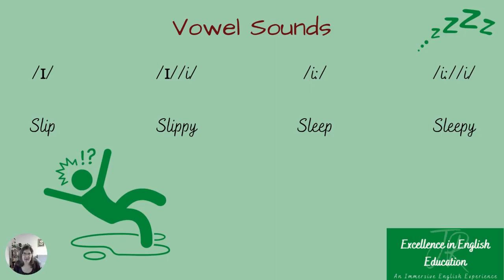I've put some examples here just to illustrate this point. So the first example is 'slip' and then 'slippy'. Most commonly, this I without the colon represents the sound that a Y at the end of a word makes. You can probably hear when I say 'slippy', the Y sounds like a longer E than the I in 'slip'.